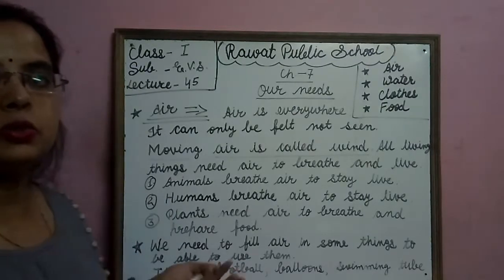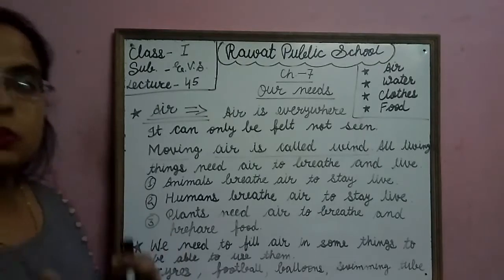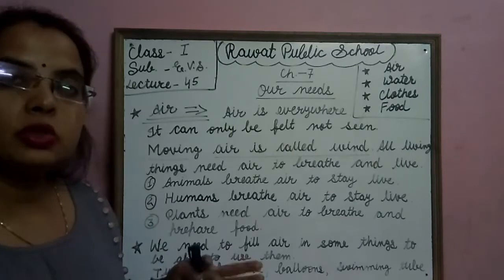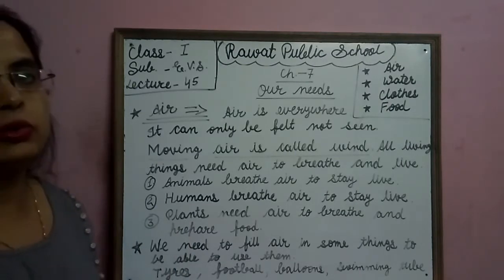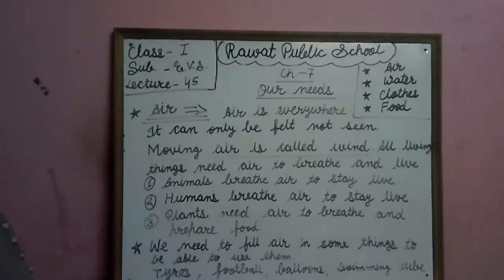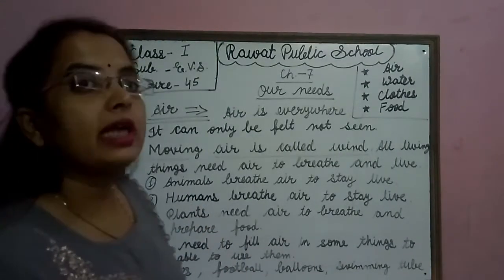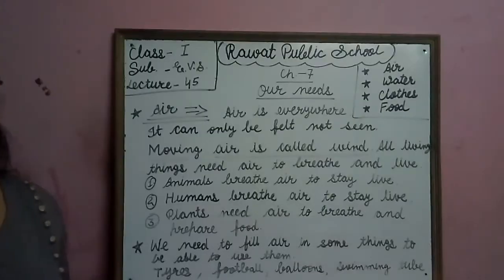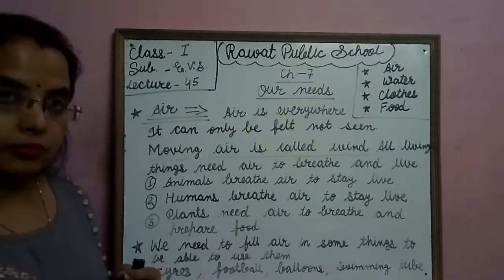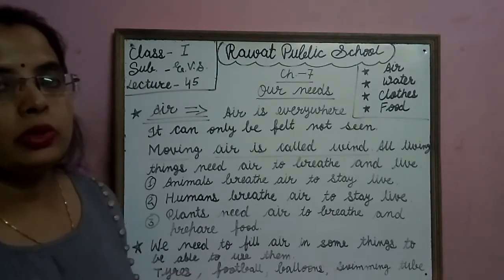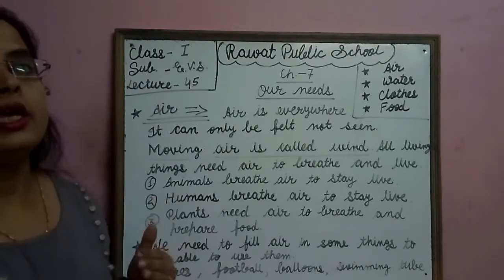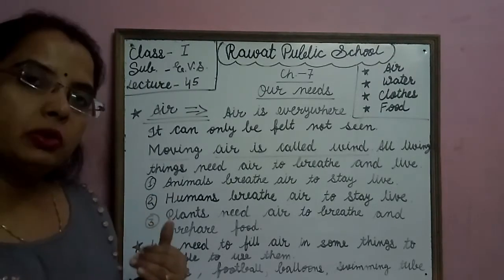Balloons mein bhi air fill hoti hain. Swimming tubes — jho swimming ki tube hoti hain, usme bhi air fill hoti hain. And kites — Air to need fly kites. Kite ko udaane ke liye Air ki zarurat hoti hain. Aeroplane ko udaan mein bhi Air ki requirement hoti hain.